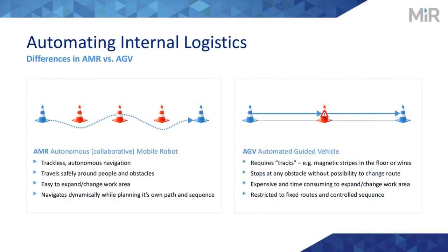MIR is classified as an AMR, unlike traditional AGVs. AGVs are more like a static guided vehicle — if something is blocking it, it will stop or go over it, and it requires tracks and other paths. An AMR is trackless and autonomous. It's more dynamic, actively planning around obstacles, and easy to reconfigure within a work environment.